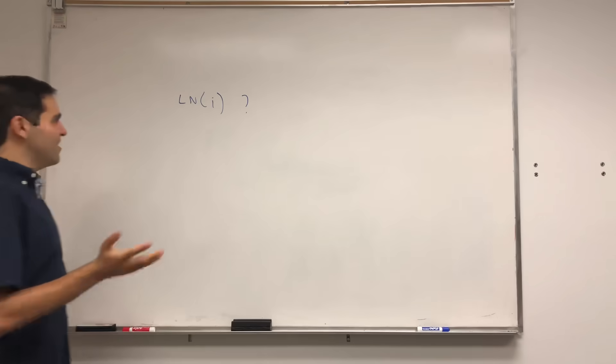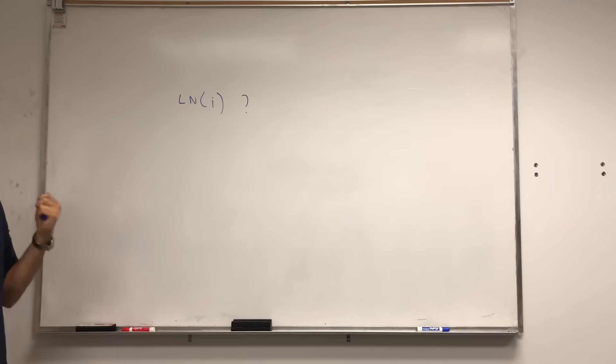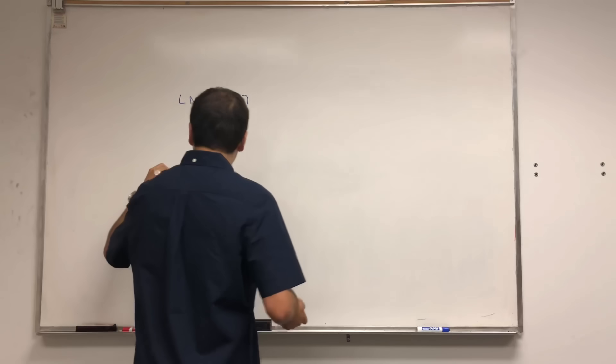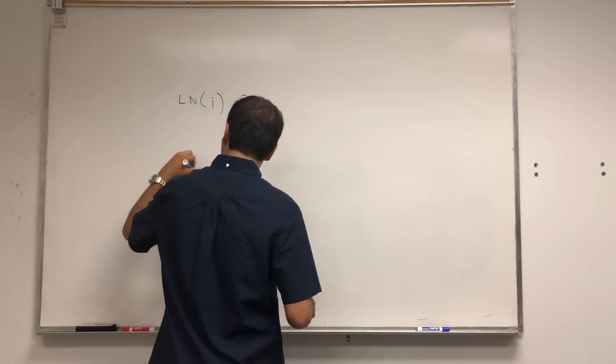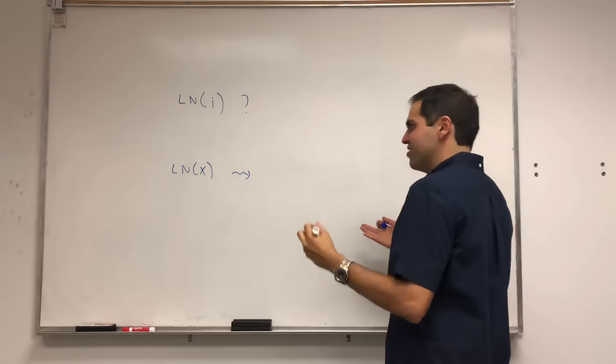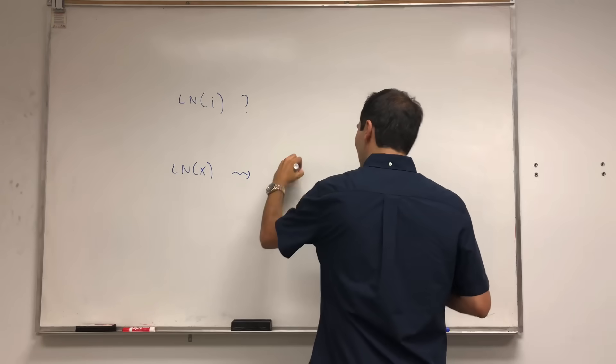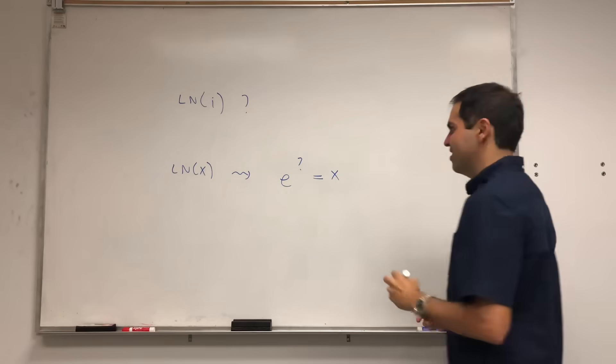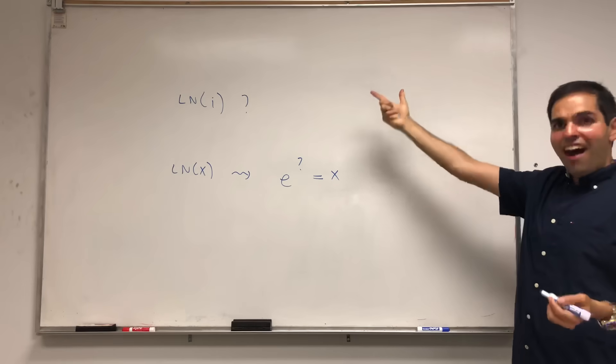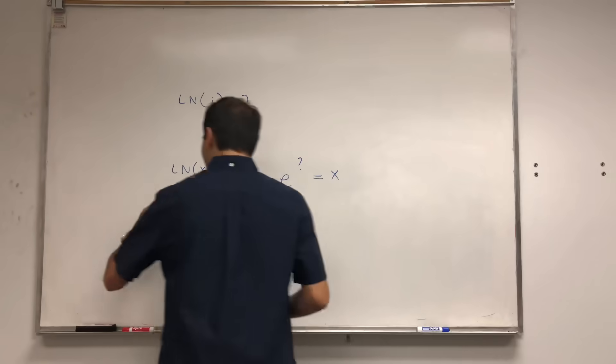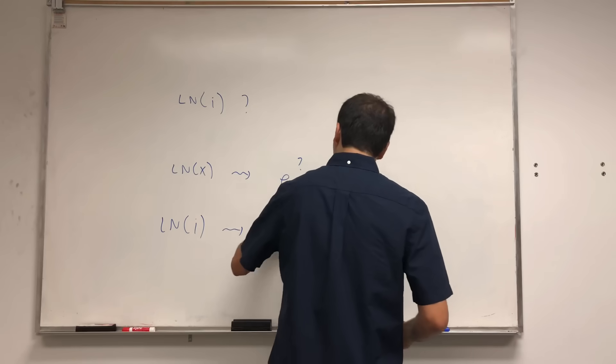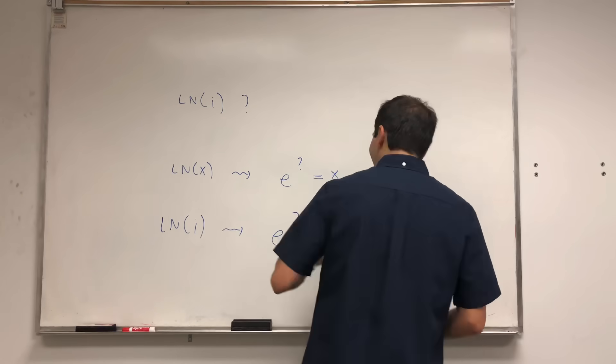Okay. And so, the question is, well, what is ln? And remember from calculus, ln always, so if you want ln of x, it always answers the question, e to the what equals to x? And so, to find ln of i, we have to ask ourselves, e to the what equals to i?